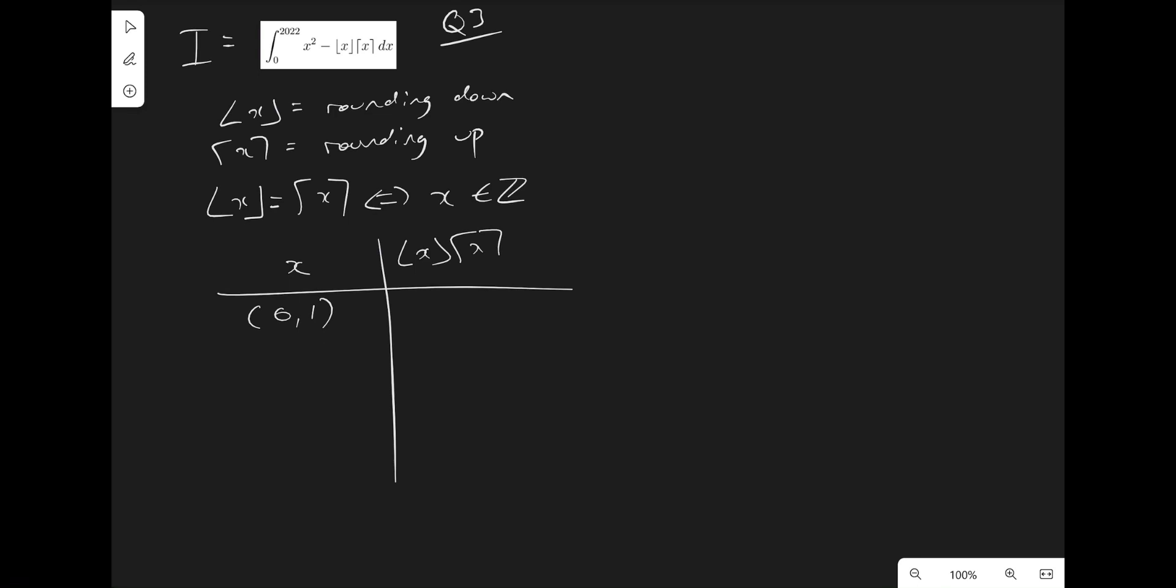We can see that any value in here would round down to 0 and round up to 1. So we multiply those two together, and we get 0 times 1 is 0.